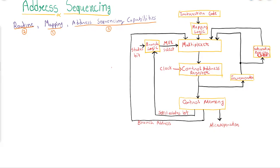Hello students, let us start our discussion. In the previous lecture we discussed the microprogrammed control organization, where we covered various components like the next address sequencer, next address generator, control address register, control memory, and control data register. Now let us try to understand how the sequencer works, as it is a key part of the microprogram controller unit, and how address sequencing takes place.